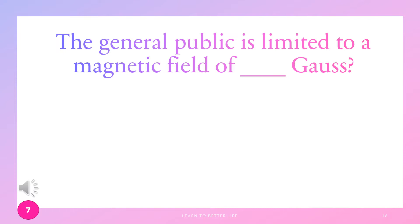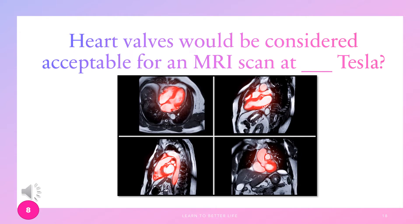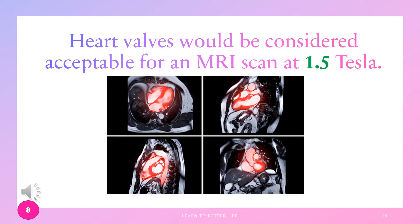The general public is limited to a magnetic field of how many Gauss? Heart valves would be considered acceptable for an MRI scan at how many Tesla? 1.5 Tesla.